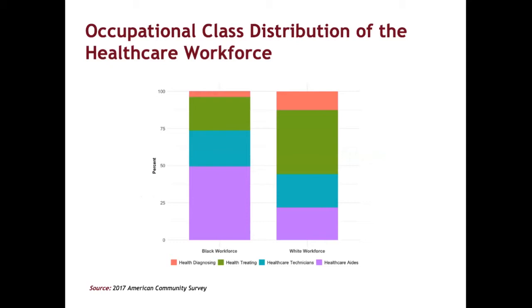This figure shows the percentage distribution of the four classes of healthcare workers for the Black and White workforces based on the American Community Surveys. The higher occupational class are situated higher on the stacked bar chart, with the left one for the Black healthcare workforce and the right one for the White healthcare workforce. You may see that a higher proportion of the White workforce have high status occupations, while more than three-fourths of the Black workforce have low status occupations.